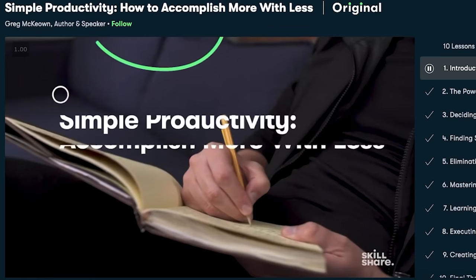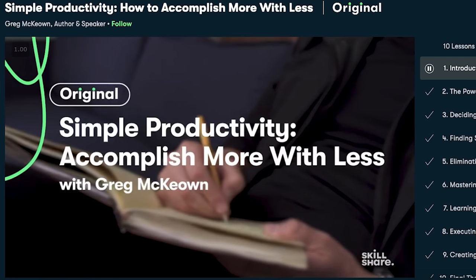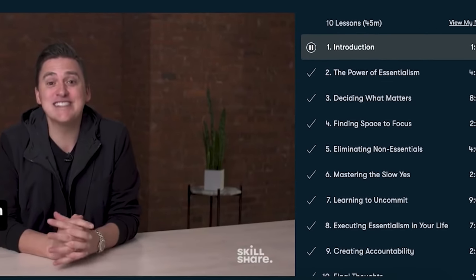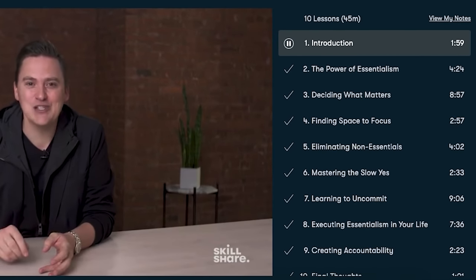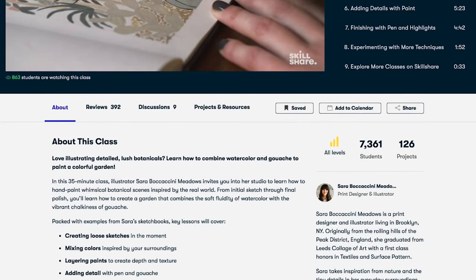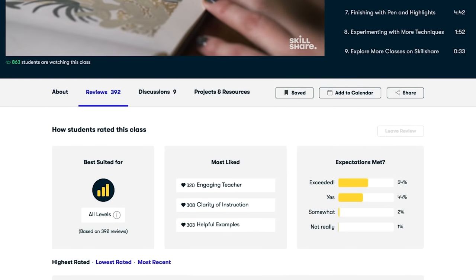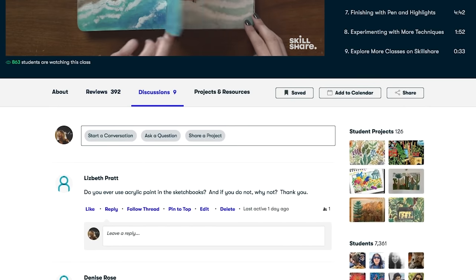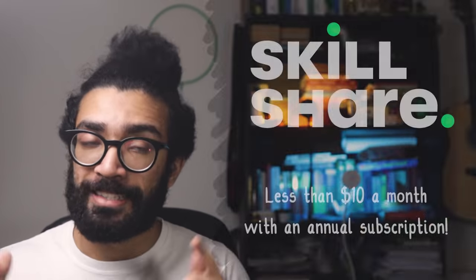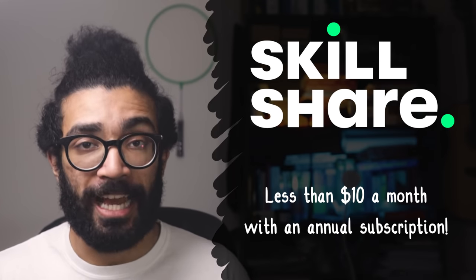For example, I took a class called Simple Productivity, How to Accomplish More with Less by Greg McEwan. And he provided some simple and easily actionable ways in which we can boost productivity. Skillshare has a large number of classes to choose from, and it's all about learning. So there are no adverts. Most classes are less than an hour long, which means that it's not a major commitment to sit down and learn something new.